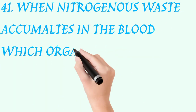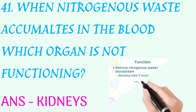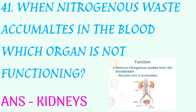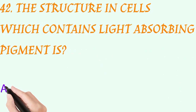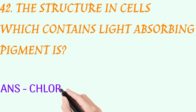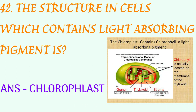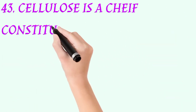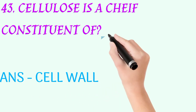When nitrogenous waste accumulates in the body, which organ is not functioning? Answer: kidneys. The structure in cells which contains light-absorbing pigment is? Answer: chloroplast. Cellulose is a chief constituent of? Answer: cell wall.